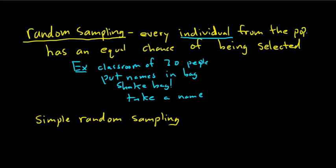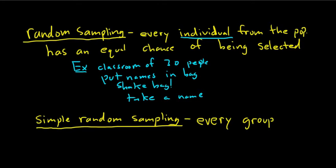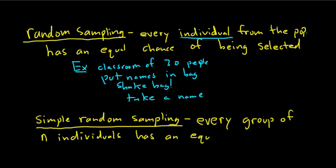Simple Random Sampling is when every group of n individuals has an equal chance of being selected from the population. The group size n is specified — for example, 10 or 15.